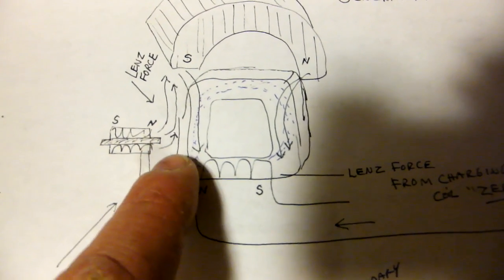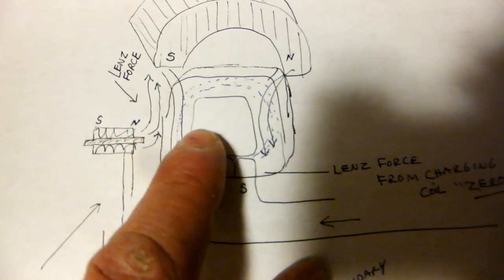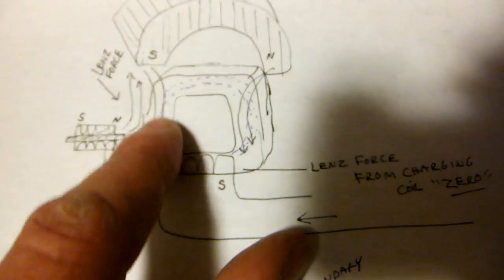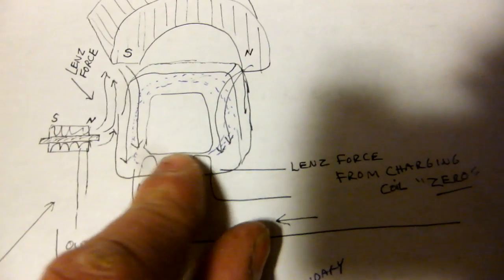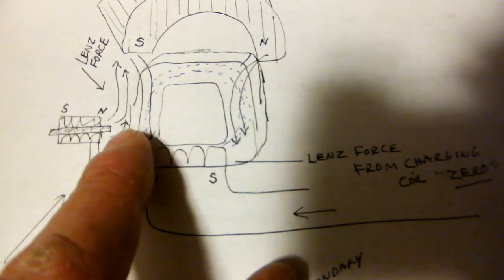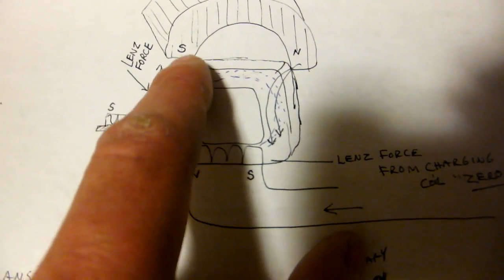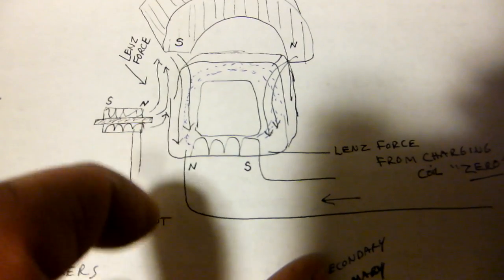If you were to put a coil on the outside of here, you take the south field and you remove the south field by directing it this way. When you remove a south field, what you're going to get is a north field—the opposite. That's how Lenz's law works: you remove south, you create north, and vice versa.